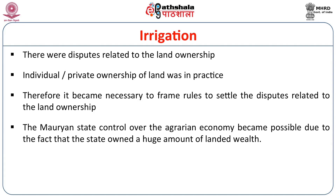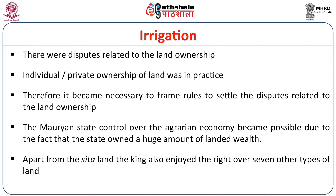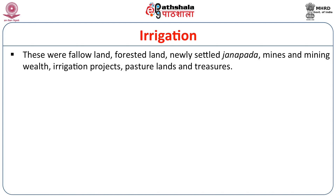Mauryan state control over the agrarian economy became possible because the state owned a huge amount of landed wealth. Apart from Sita land, the king also enjoyed rights over seven other types of land: fallow land, forested land, newly settled Janapada, mines, mining wealth, irrigation projects, pasture lands, etc.